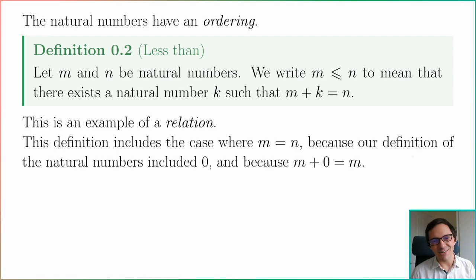Another important property of the naturals is that they have an ordering. Given natural numbers m and n we'll write m ≤ n to mean that there exists a natural number k such that m + k = n. This captures the idea that m is less than or equal to n because k has to be a natural number, no negative numbers involved here, but I'm including 0 so I'm including the case where m equals n.